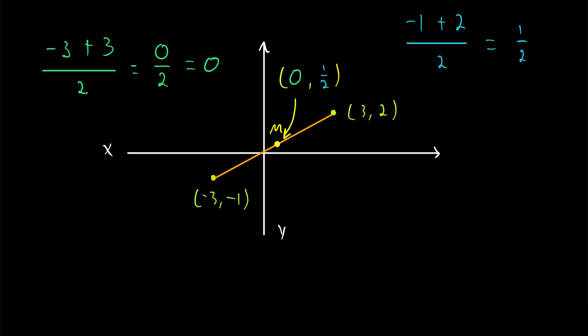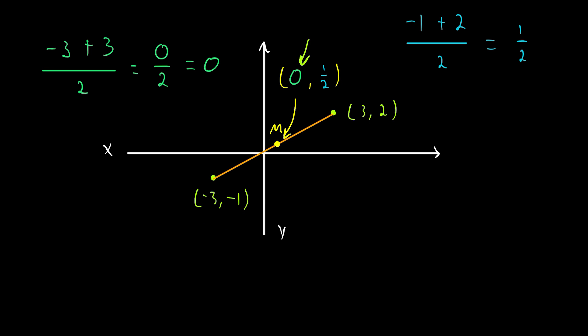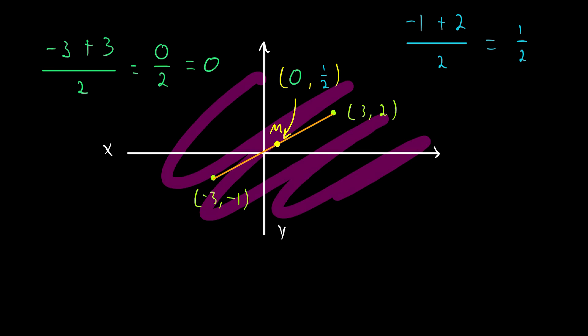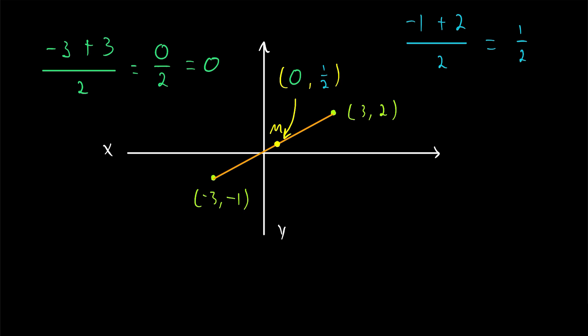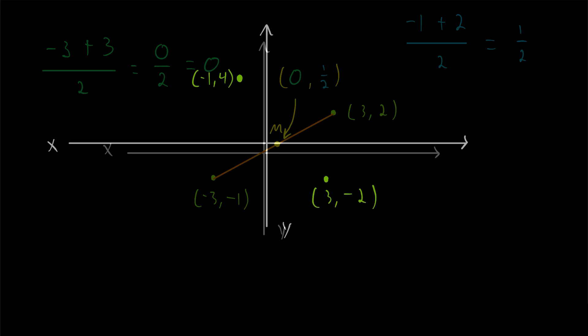We can see one of the weaknesses of drawing graphs here. Since the picture hasn't been carefully drawn to exactly represent the numbers, the midpoint doesn't look like it has an x-coordinate of 0, even though the math shows that it must. So this is just a rough sketch. But indeed, the midpoint of (negative 3, negative 1) and (3, 2) is the point (0, one half).